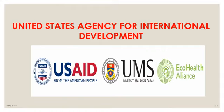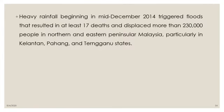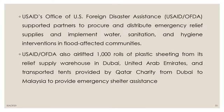USAID — the United States Agency for International Development — responded when heavy rainfall in mid-December 2014 triggered floods causing at least 17 deaths and displacing more than 230,000 people in Northern and Eastern Peninsular Malaysia, particularly in Kelantan, Pahang, and Terengganu. USAID's Office of US Foreign Disaster Assistance supported partners to procure and distribute emergency relief supplies and implement water, sanitation, and hygiene interventions in flood-affected communities.